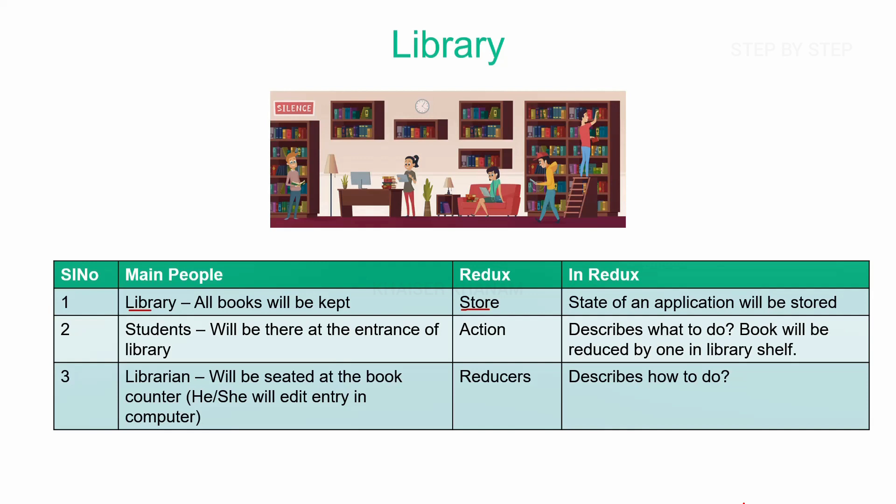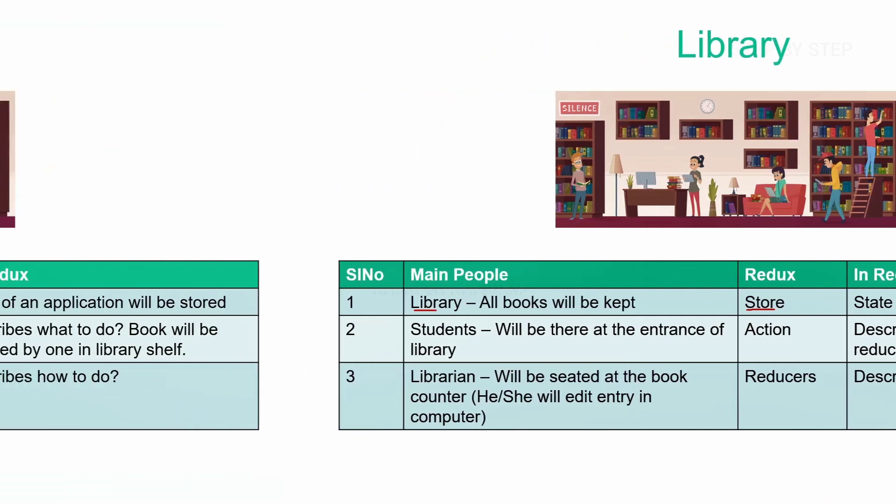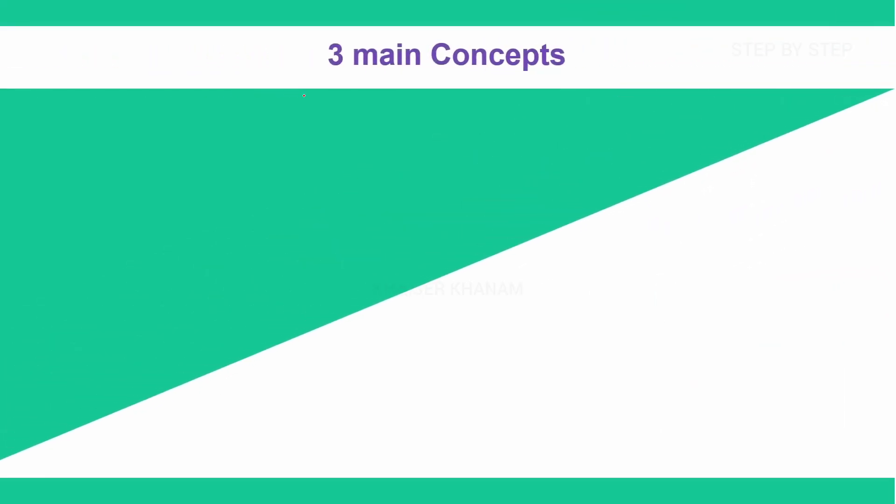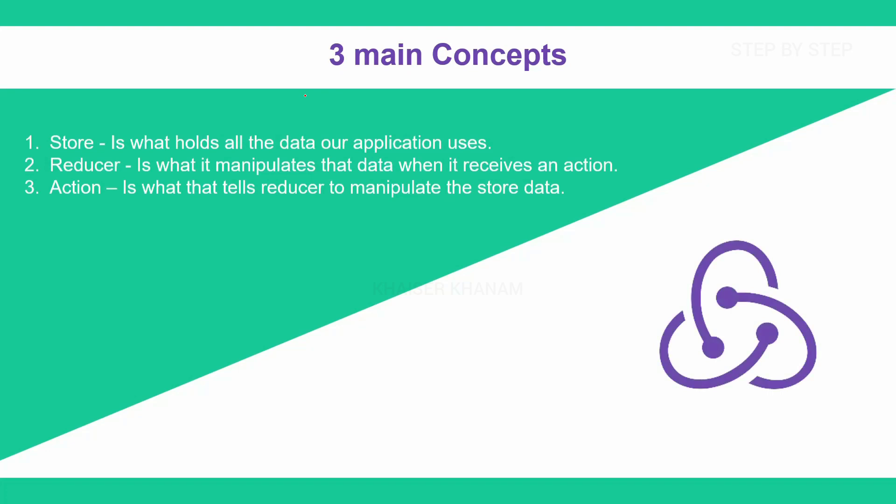So the library will be compared to the store, which holds our entire application state, and the reducer will be compared to the librarian, which edits the entry in the computer and accordingly the book is either added or reduced from the library. This is the real-world scenario I have taken to explain about store, action, and reducers. I have shown you two examples and now you will have a clearer understanding of store, action, and reducers.